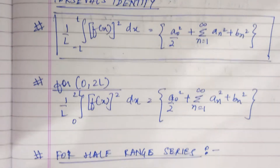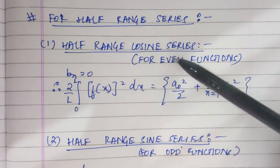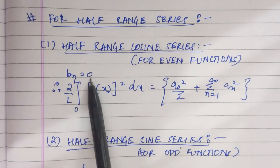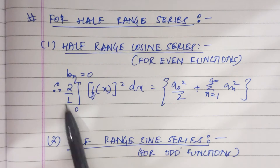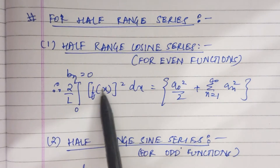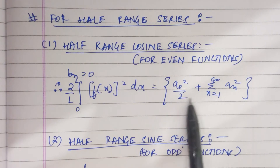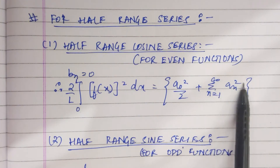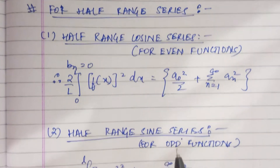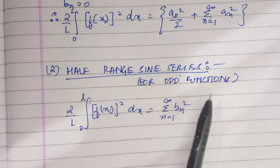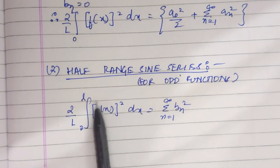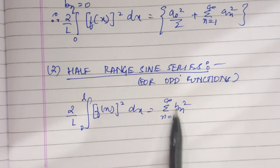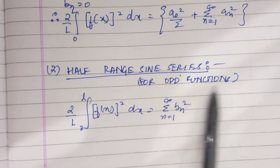For the half-range cosine series, or for all even functions, b_n equals 0, therefore 2 by l from 0 to l of f(x) squared dx equals a naught squared by 2 plus summation from n equals 1 to infinity of a_n squared. For the half-range sine series, for all odd functions, 2 by l from 0 to l of f(x) squared dx equals summation from n equals 1 to infinity of b_n squared, and a_n equals 0.